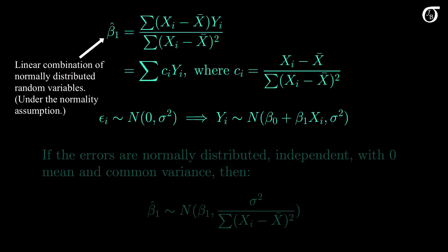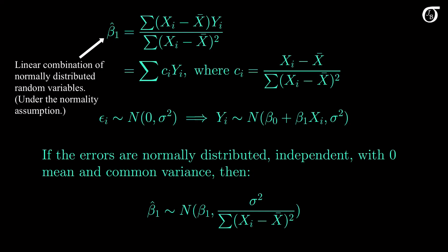Since a linear combination of independent, normally distributed random variables is itself normally distributed, the slope estimator beta1 hat is normally distributed. So if we have normality of errors, independence, and common variance, beta1 hat is normally distributed with a mean of beta1 and a variance of sigma squared over the sum of squares of x. We'll use that sampling distribution of beta1 hat to develop appropriate confidence interval and hypothesis testing methods for inferences regarding beta1. Note that the central limit theorem applies here, and even if the epsilons are not normal, if the sample size is large enough, the slope estimator beta1 hat will be approximately normal.